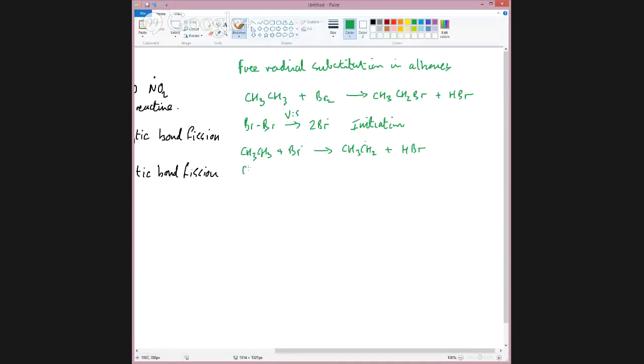And your ethyl radical reacts with some bromine. And that makes your product, in this case, a bromopropane, and it reforms a bromine radical. So this bromine radical here can go back and start the whole process over again. So this here is propagation.